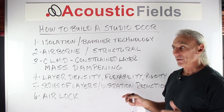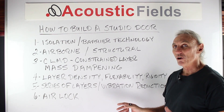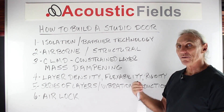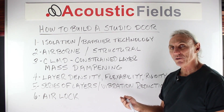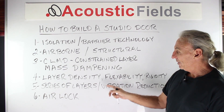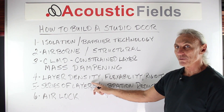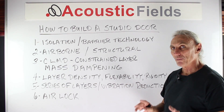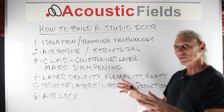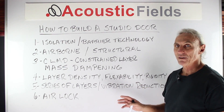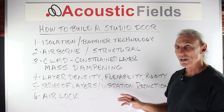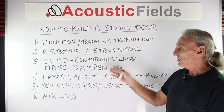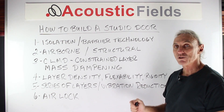Everything is interrelated. There is no one solution that fits all problems — no universal answers. It's all dependent on the amplitude and the frequency of your issues. Certain materials of certain densities work for certain frequencies. Barrier technologies come in two types: one that works below 125 cycles and one that works above. Completely different approaches, structures, costs, and weights — everything is different depending on the frequency and the strength of your issue.